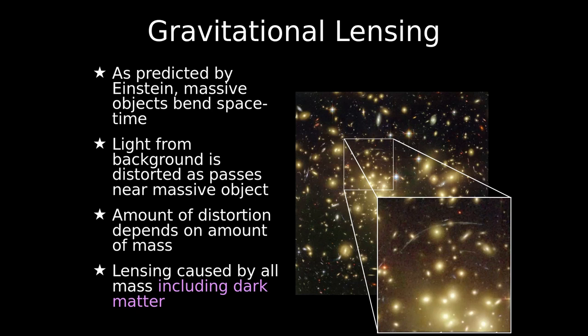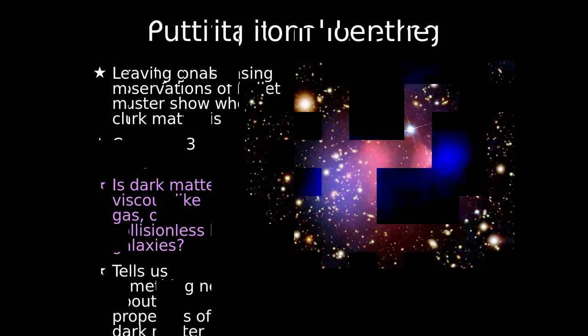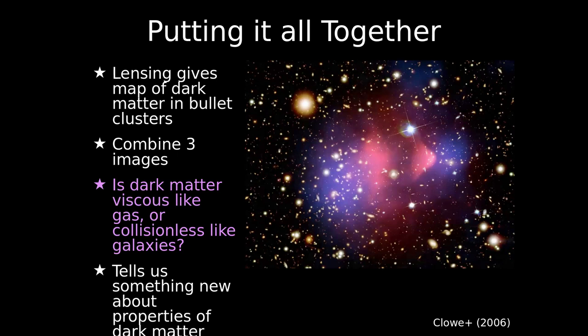Let's apply gravitational lensing to the bullet cluster. You can see the two clusters quite clearly — the left one more massive, the right one smaller. They've passed through each other but show no evidence of interaction. Overlaying them with the optical image reveals that, just like the galaxies, the dark matter is further apart than the gas. The dark matter has clearly not interacted with itself. This gives us another property of dark matter: it doesn't interact even with itself — it's really not viscous, it just doesn't interact with anything, which helps explain why we can never see it.